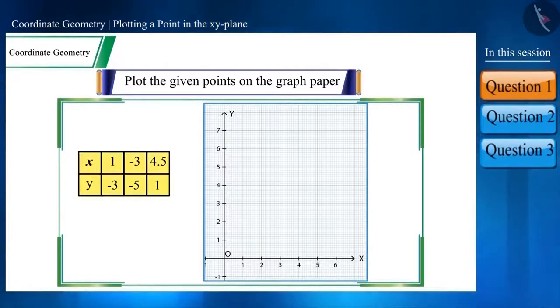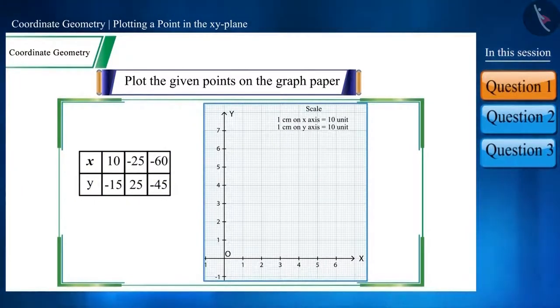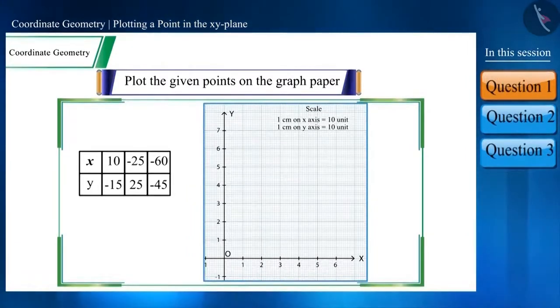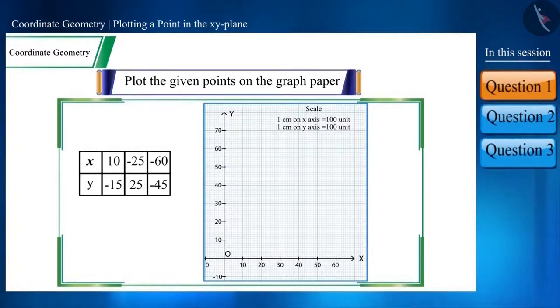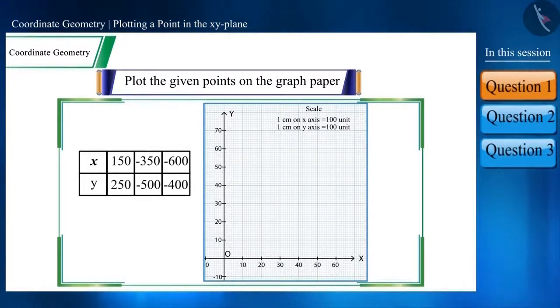Before plotting any coordinate point on the plane we should set the scale. As these numbers are between 0 and 10, we take 1 centimeter equals to 1 unit. If this point was between 0 and 100, we would have taken 1 centimeter equals to 10 units, and the point being like this, 1 centimeter equals to 100 units.